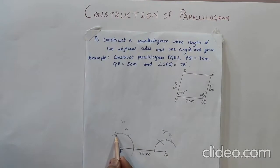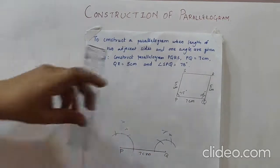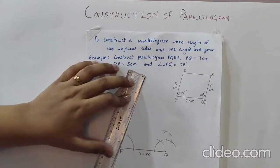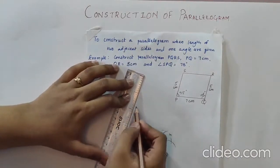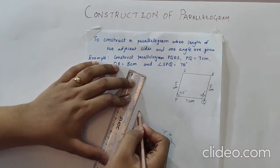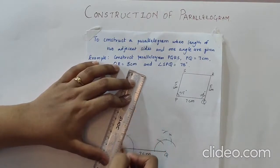So now 75 degree how we have to construct? Cut an arc of 60, 90, this will be 90 and between 90 and 60 this will be my 75 degree. In exam you don't have to construct it directly. You have to do it stepwise.